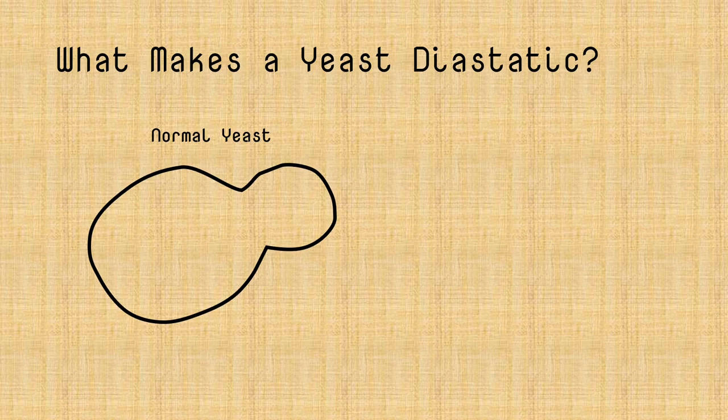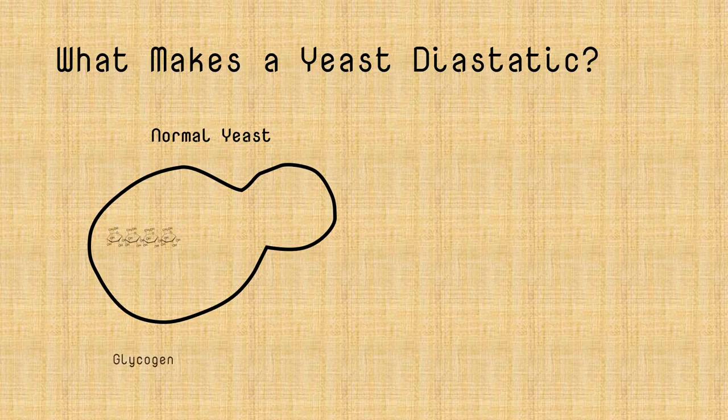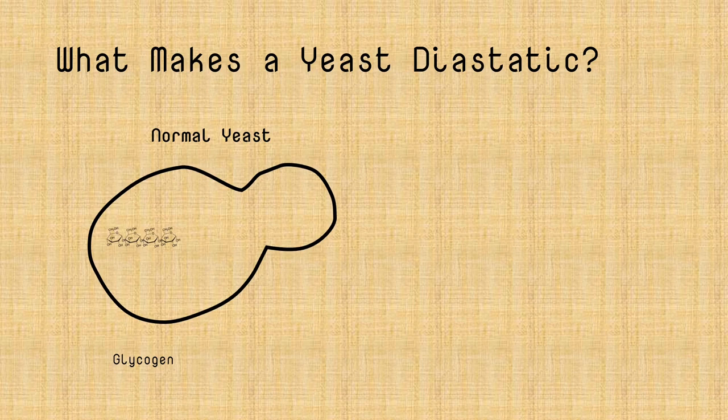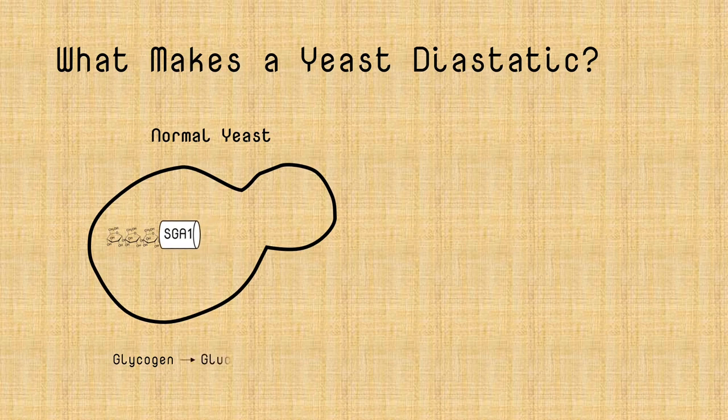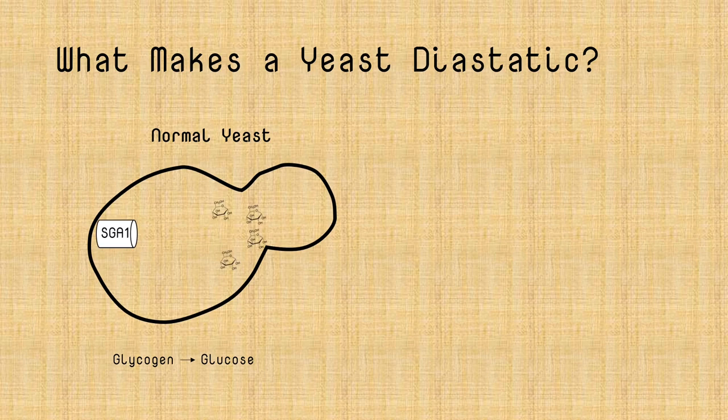So what makes yeast diastatic? Well, in normal yeast, in non-diastatic yeast, there is an energy store called glycogen. This is basically a string of glucose molecules strung together into a chain. When normal yeast need to use this energy store, they express a gene called SGA1, which will break these down into individual glucose molecules that the yeast can then use for energy.